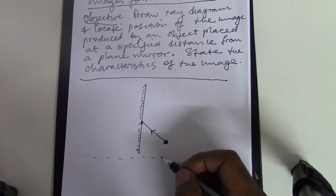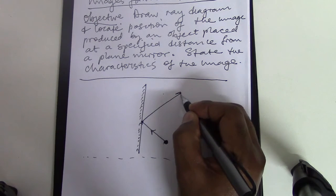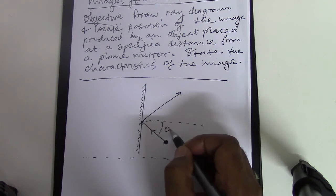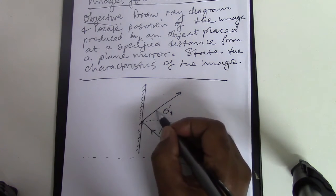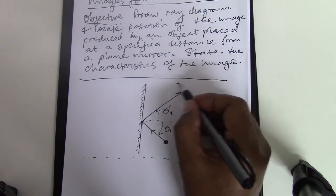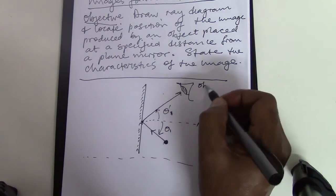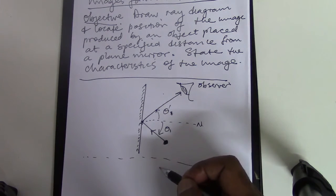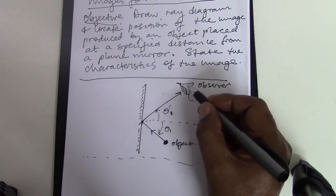The ray strikes the mirror here and is reflected in this direction. The reflection must always fulfill the law of reflection. If this is my normal, then this is my angle of reflection and this is my angle of incidence. Now, if I were to put an eye at this position — an observer who is observing this object — this ray comes from the object, strikes the mirror, and gets into the eye of the observer.